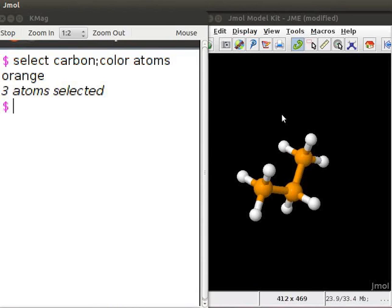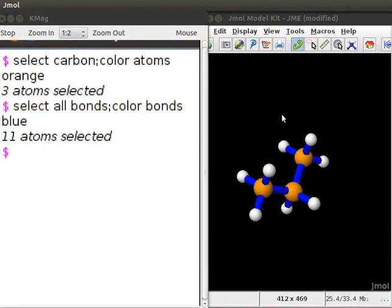Now, to change the color of all bonds to blue, at the dollar prompt, type select all bonds semicolon color bonds blue. Press Enter. Observe that all the bonds in the propane model are now blue in color.